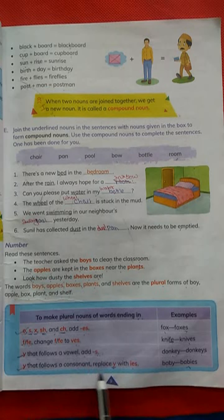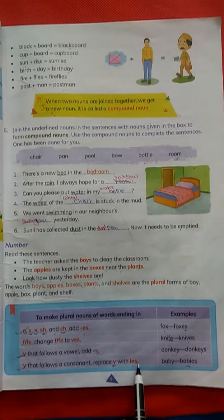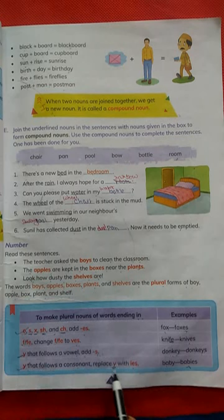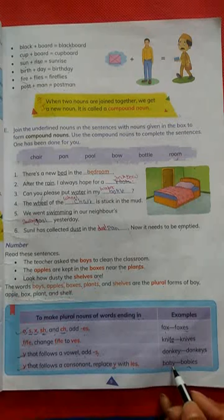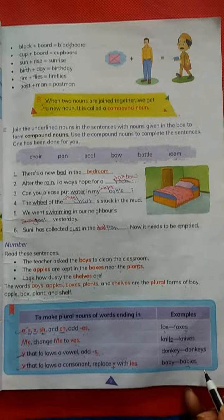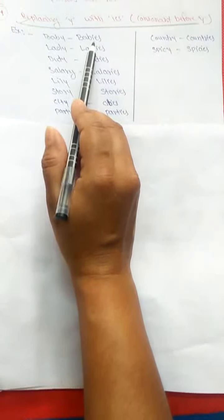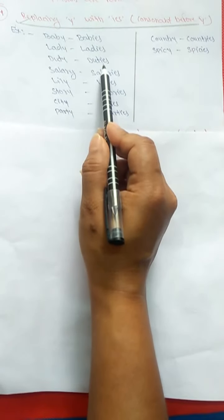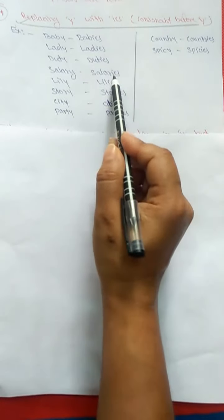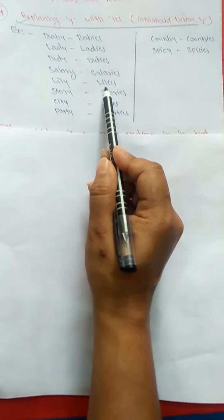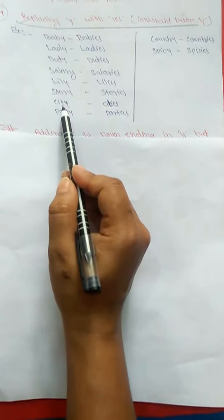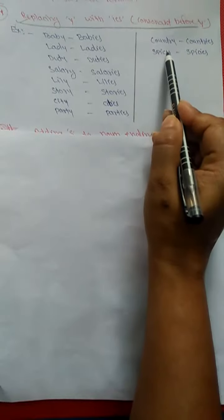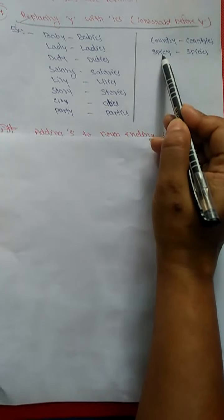When Y follows a consonant, replace Y with IES. For example: baby becomes babies. Lady becomes ladies. Duty becomes duties. Salary becomes salaries. Lily becomes lilies. City becomes cities. Party becomes parties. Country becomes countries.